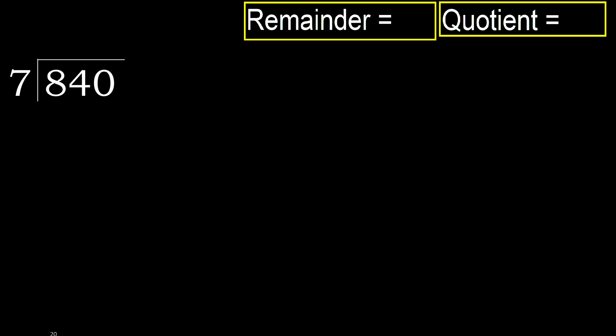840 divided by 7. 8 is not less, therefore work with 8. 7 multiplied by which number is nearest to 8 but not greater? 7 multiplied by 2 is 14 — 14 is greater, so multiply by 1. 7 is not greater.